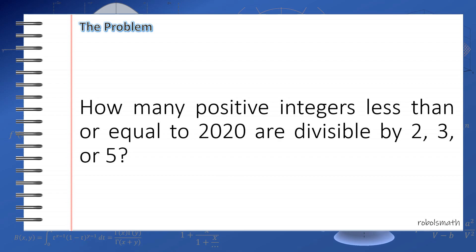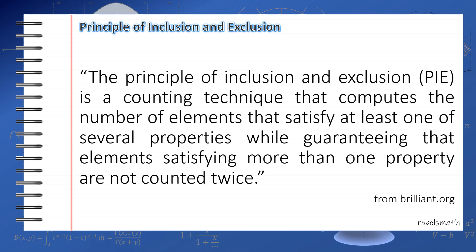let's first introduce the principle of inclusion and exclusion. According to brilliant.org, which is my favorite math website, the principle of inclusion and exclusion is a counting technique that computes the number of elements that satisfy at least one of several properties. The essential point here is to avoid counting more than once. What we want to do is to include and exclude properly so we don't have double counting.